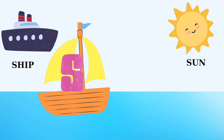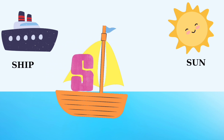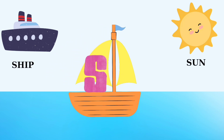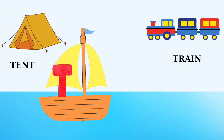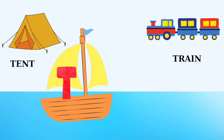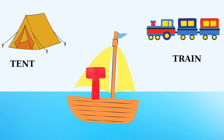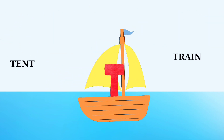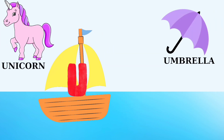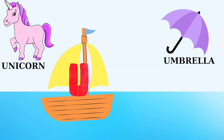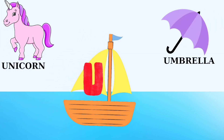S is for ship, S is for sun. T is for tent, T is for train. U is for unicorn, U is for umbrella.